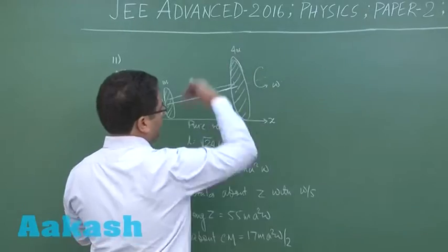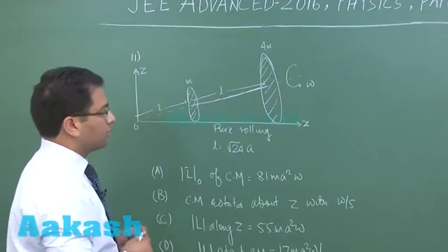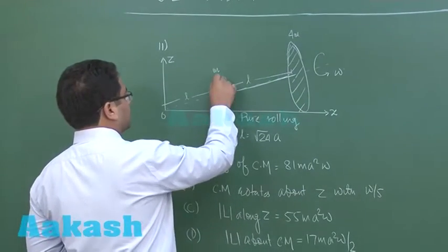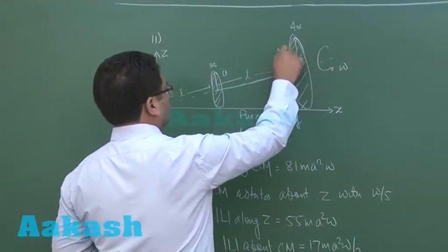The whole thing is rolling in this way with an angular velocity omega, and it is rolling without slipping. Apart from that, the radius of this thing is given as A and the radius of this thing is given to be 2A.